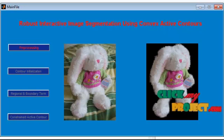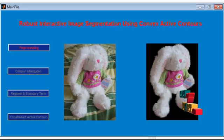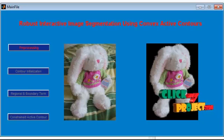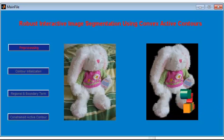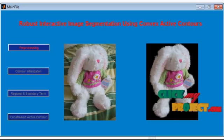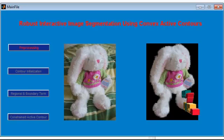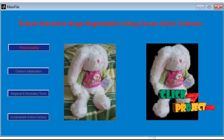To conclude, this method outperforms existing interactive segmentation methods by exhibiting many desirable properties, including robustness to user inputs and different initializations, the ability to produce a smooth and accurate boundary contour, and the ability to handle topology changes.